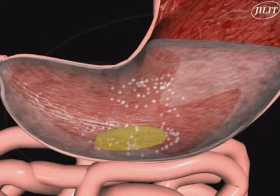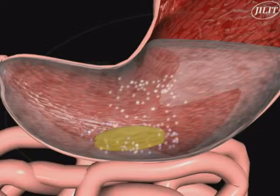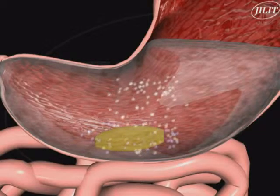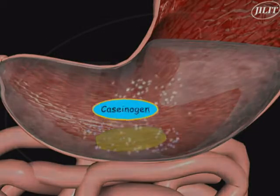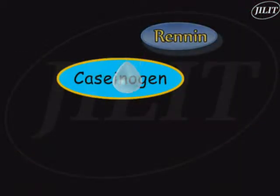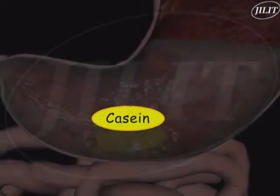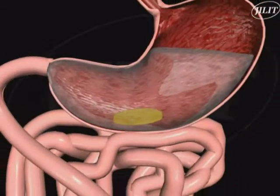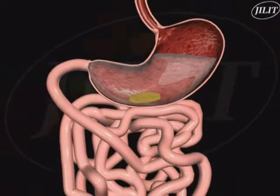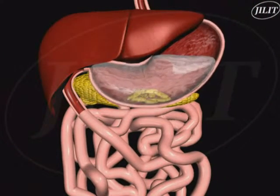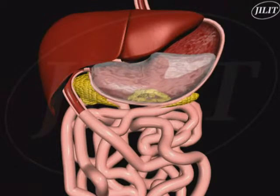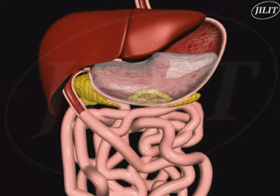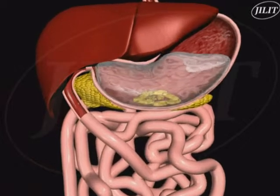Renin coagulates milk by converting the soluble milk protein caseinogen into the insoluble casein. During this period, food is thoroughly churned and mixed with gastric juices by the peristaltic contractions of the stomach wall. Eventually, the stomach contents become a semi-fluid called chyme.